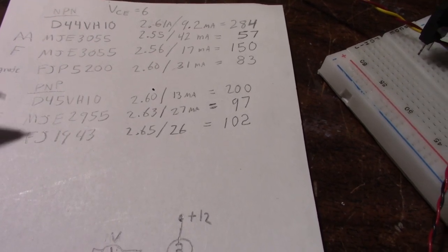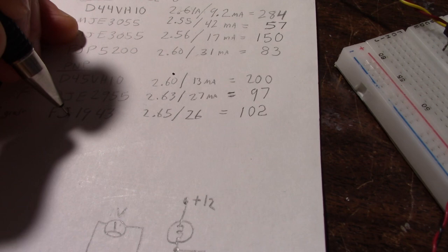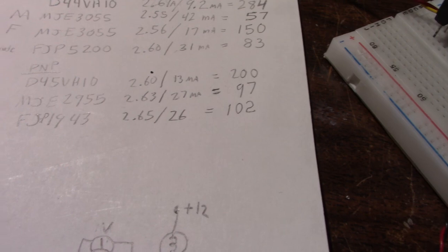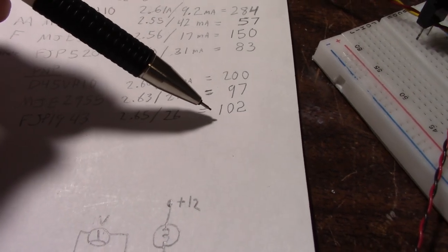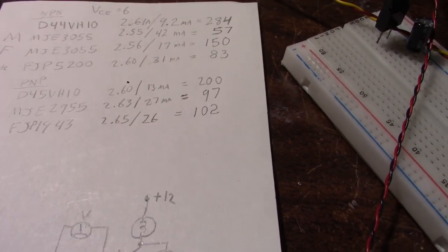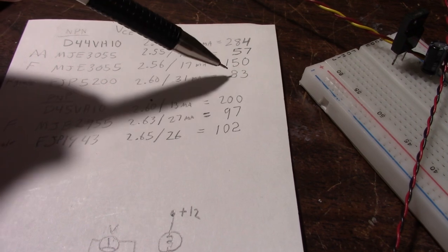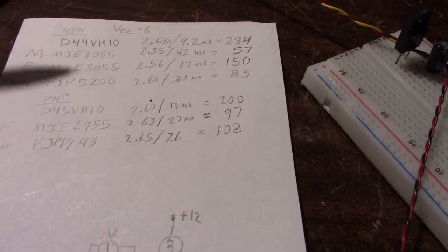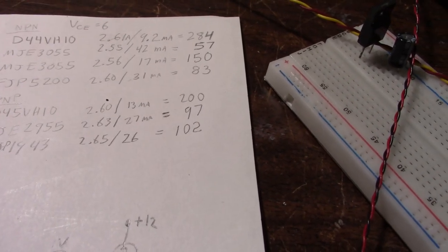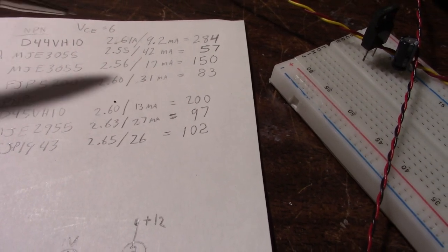I had a Fairchild MJE2955, which complements the 3055 and that one came in at 97. So a little bit less than the NPN version. Next was the R grade FJP1943. Gain of 102. So it's in the ballpark of what I would expect. If you get the O grade version of these transistors, you'd get a lot higher gain. Like I said, that's what I'd recommend in the output stages.